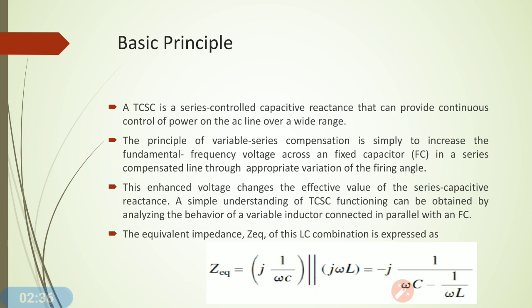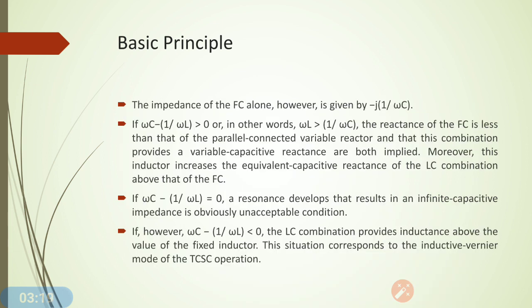Before the TCSC, we use a series capacitor in the transmission line to compensate the series inductive reactance. In order to control the reactance of the capacitor, we connect this capacitor in shunt with a Thyristor Controlled Reactor. The equivalent impedance of this LC combination is Z equivalent, equal to j(1/ωC) in parallel with j(ωL). The impedance of the capacitor alone is given by minus j(1/ωC).